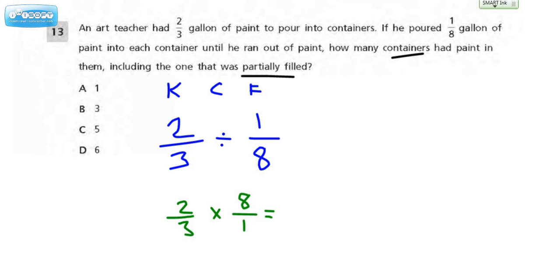And now we're going to find what we get when we multiply. Two times eight would be 16. Three times one would be three.